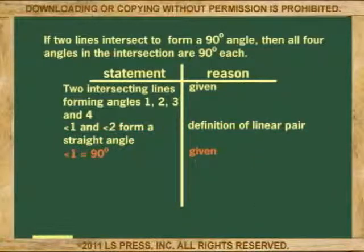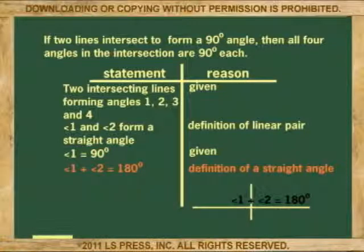Third: angle 1 equals 90 degrees. Reason: given. Fourth: angle 1 plus angle 2 equals 180 degrees. Reason: definition of a straight angle.